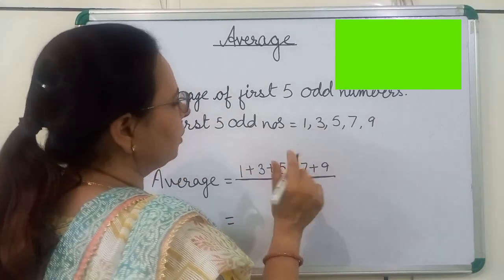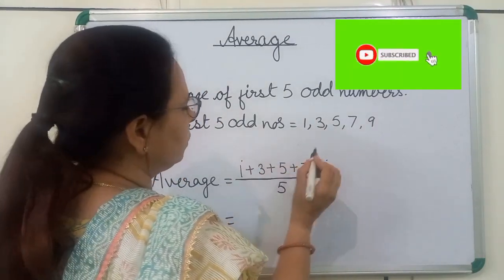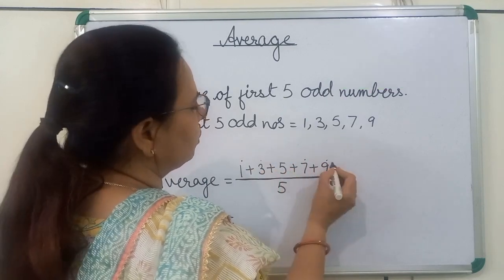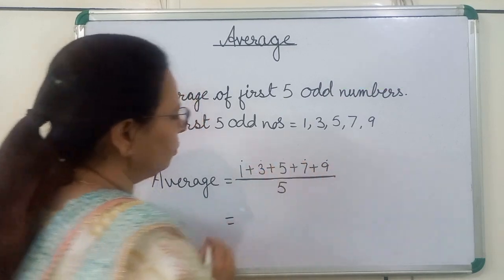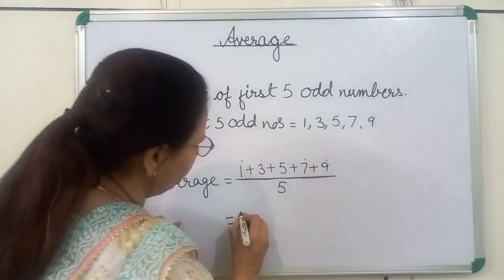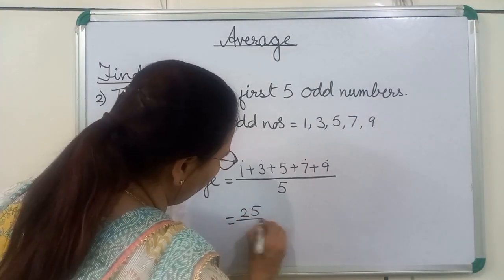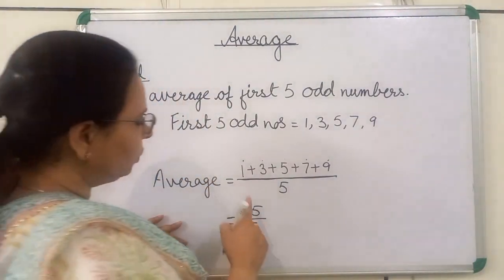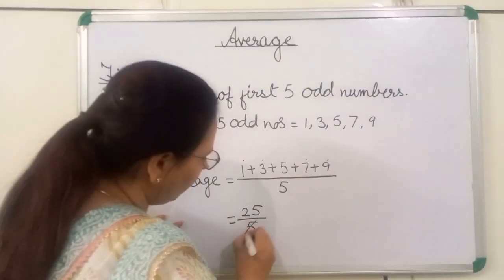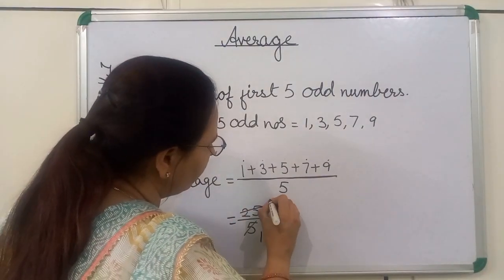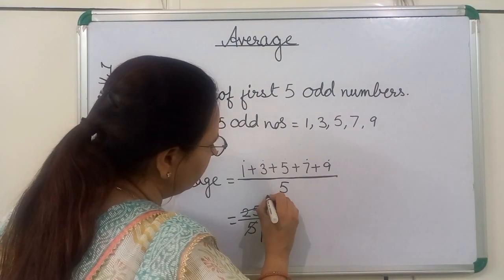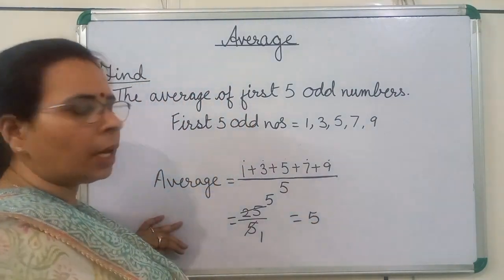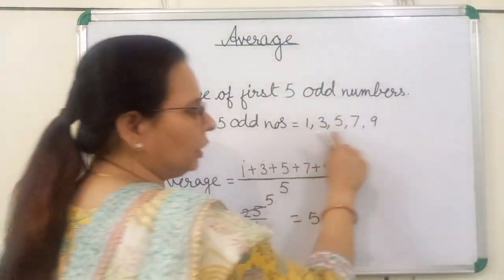Now, we will add these numbers: 1 + 3 + 5 + 7 + 9. We get 25 upon 5. Now, we will reduce this fraction: 25 divided by 5 gives us 5. So, 5 is the average of these numbers.